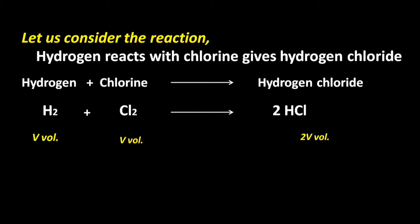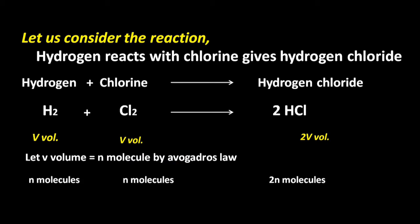Here, V volume of hydrogen combined with V volume of chlorine gives 2V volume of hydrogen chloride. Let V volume equal to N molecules by Avogadro's law. N molecules of hydrogen combined with N molecules of chlorine gives 2N molecules of hydrogen chloride.